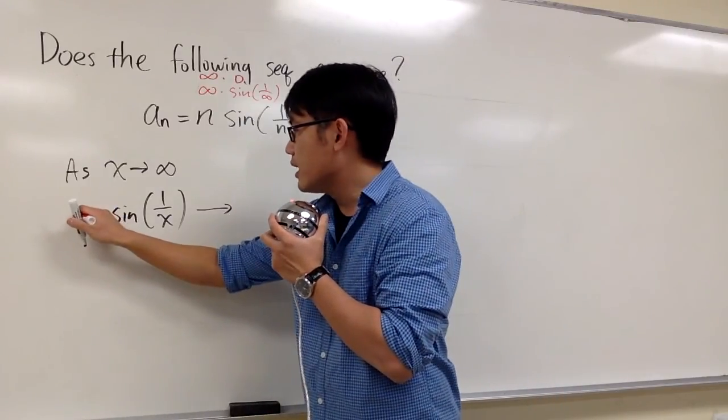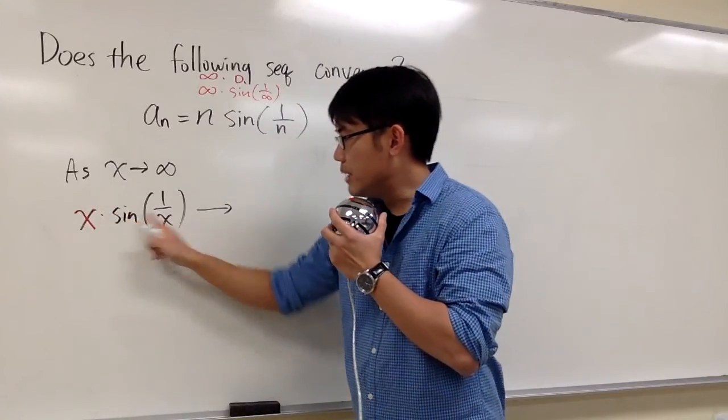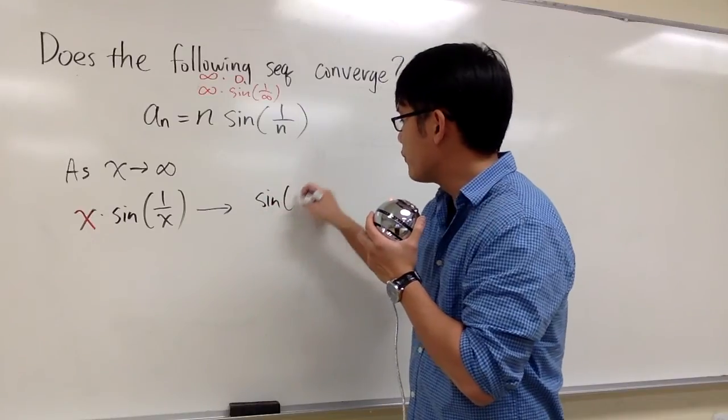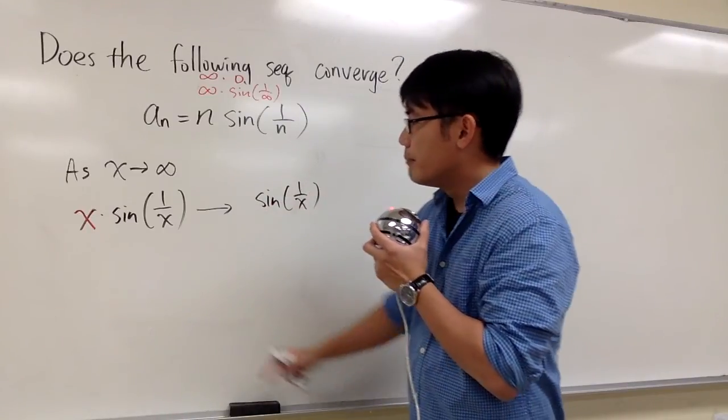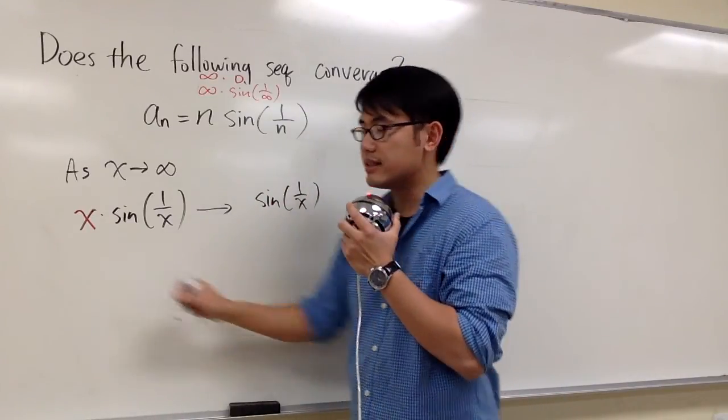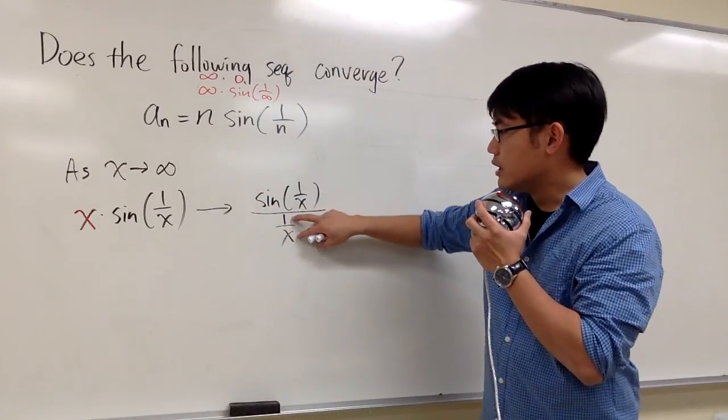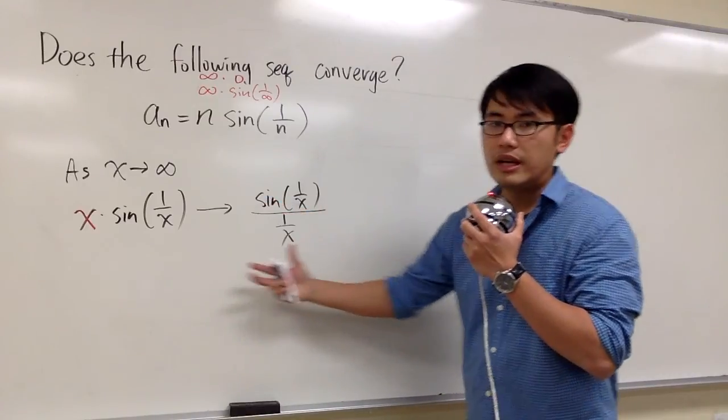We can focus on the x. We keep this on the numerator. I will write this down as sine of 1 over x, but then we will purposely write the x as over 1 over x. As you can see, if you flip this, they are equivalent.